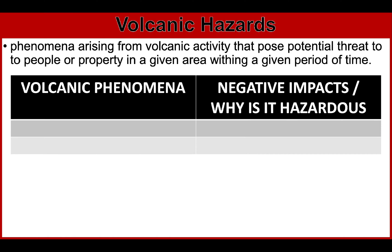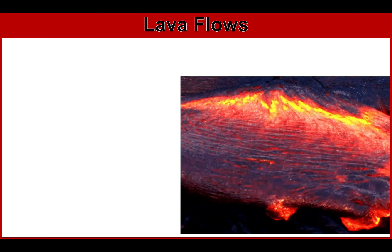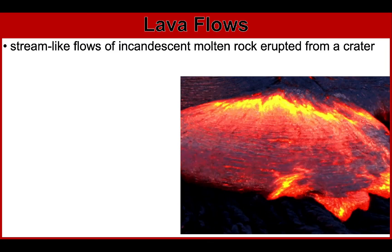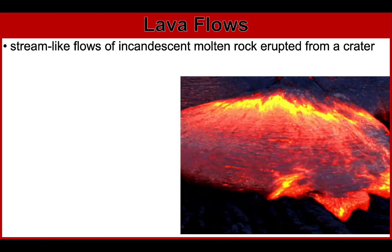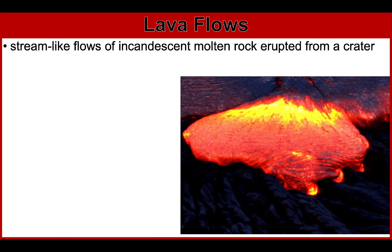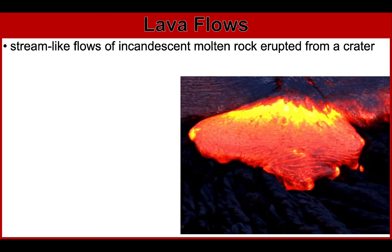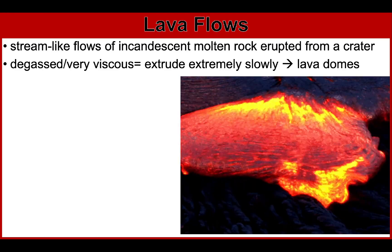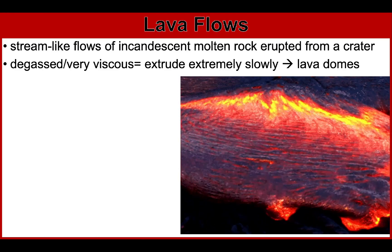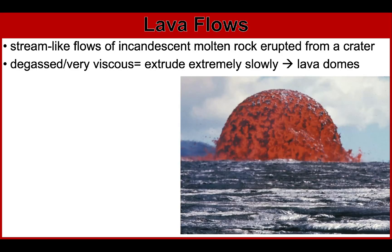Let's start with the first volcanic phenomenon: lava flows. Lava flows are stream-like flows of incandescent molten rock erupted from a crater or fissure. Please do not confuse lava and magma. Magma refers to the molten rock still inside the volcano; it becomes lava when it reaches the surface. When lava is degassed — meaning dissolved gases are removed — and/or very viscous, it tends to extrude extremely slowly, forming lava domes.